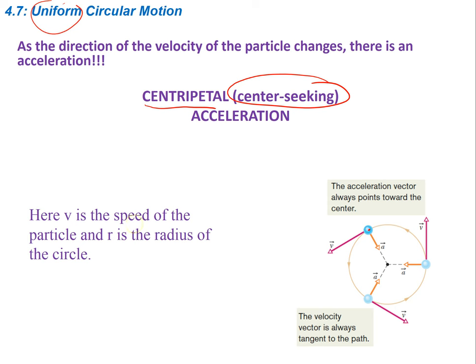Here, V is the speed of the particle and R is going to be the radius — if you measure this distance, that is going to be the radius. The equation that relates everything together: our centripetal acceleration, A sub C, is equal to V squared over R. So centripetal acceleration equals the linear velocity magnitude squared, divided by R, which is the radius of the circle.